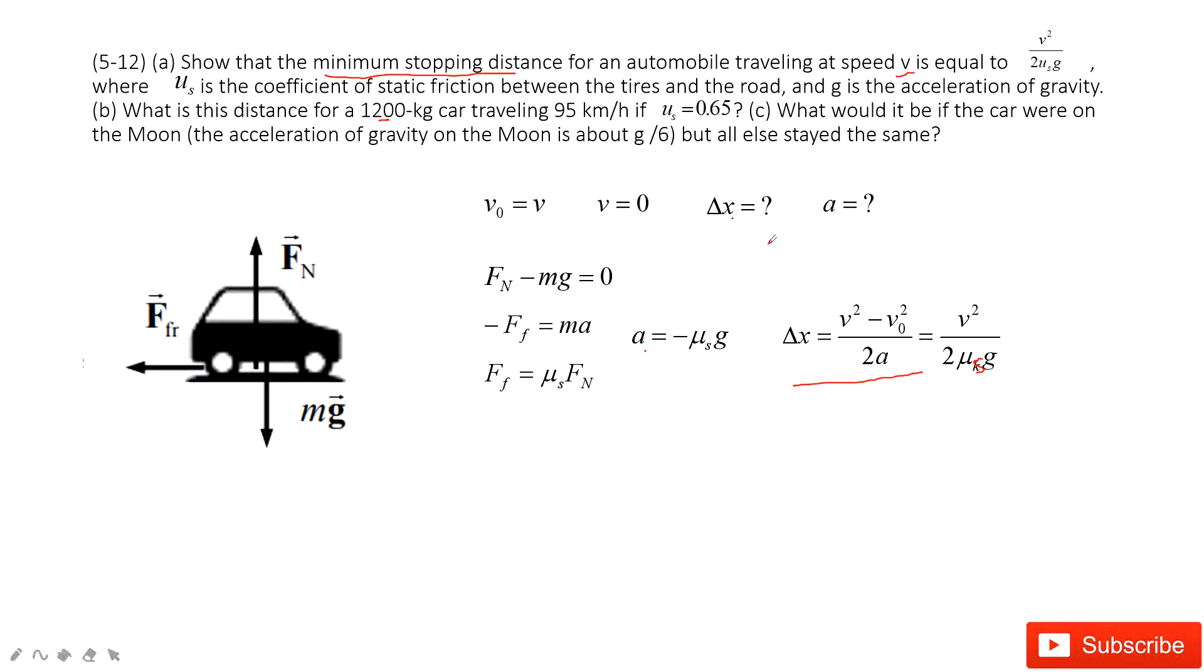We can get the displacement. The next one asks you what would it be if the car is on the moon? If this car is on the moon, that means g becomes g divided by 6. So we just need to change g to g divided by 6.